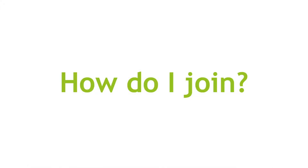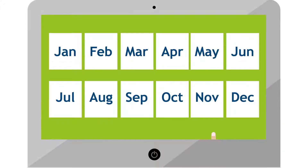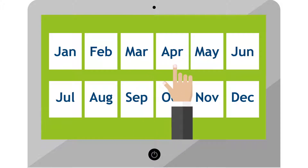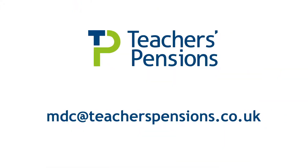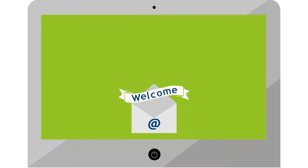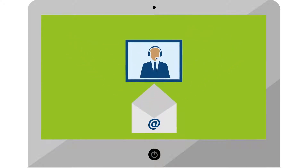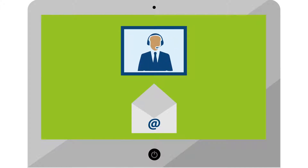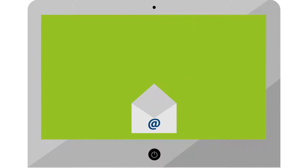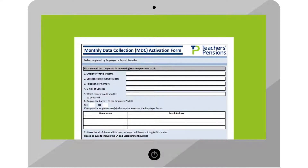You can choose to join from any month you like. You just need to fill in the activation form, which can be found on our website, and then return it to mdc@teacherspensions.co.uk. You'll get a welcome email providing additional guidance notes and specification information, and you'll receive support from the dedicated MDC team throughout the boarding process. If you use a payroll provider, you'll need an activation form for them to provide the information. We recommend you let them know where to find the information on our website.